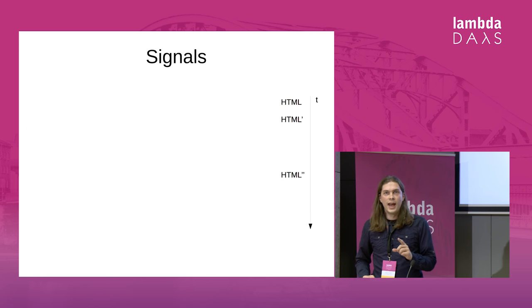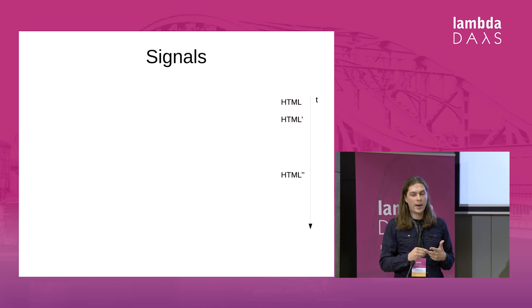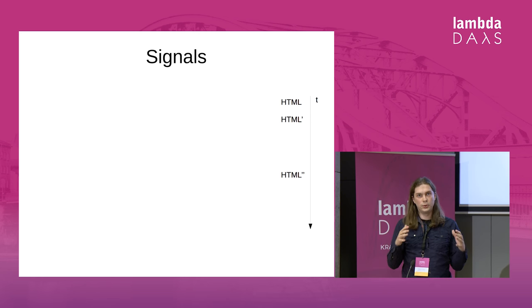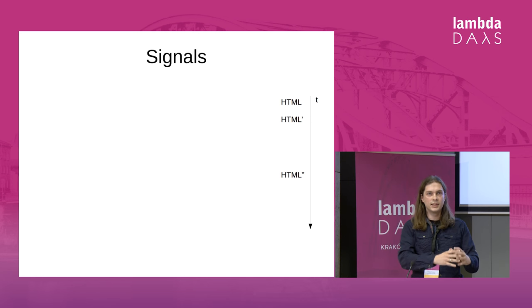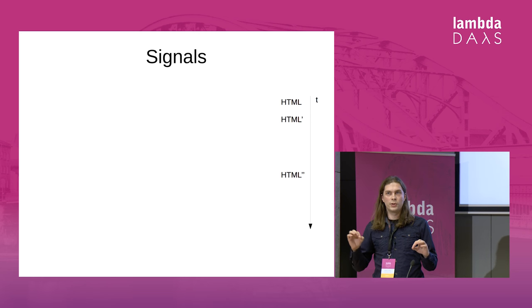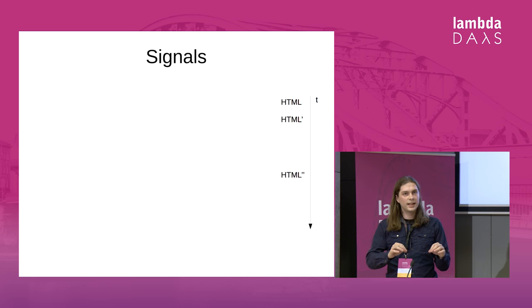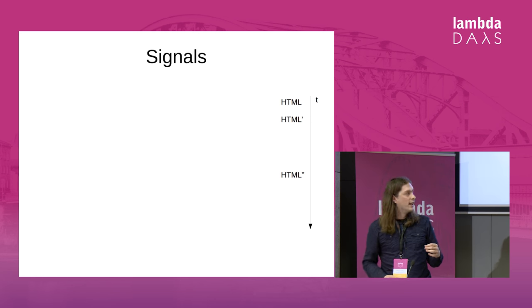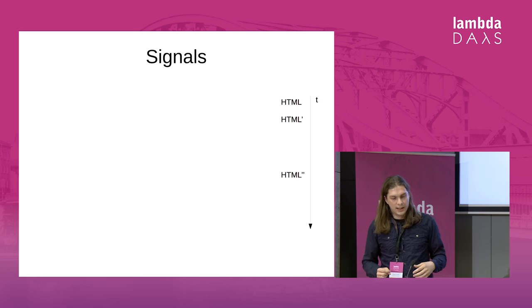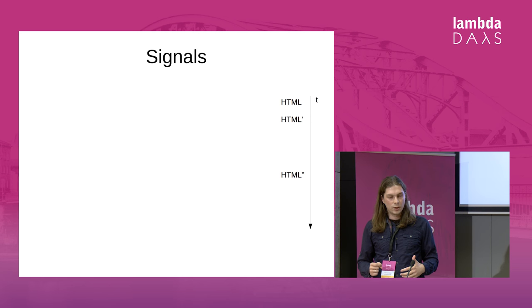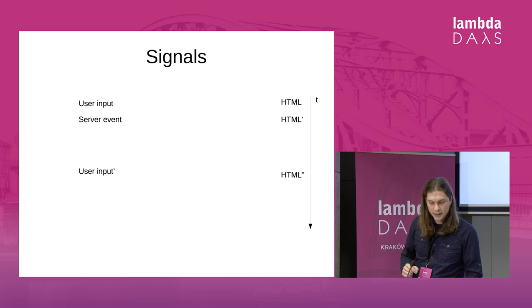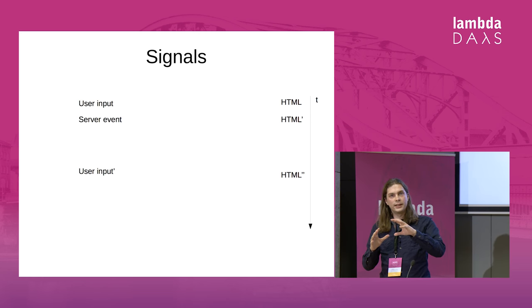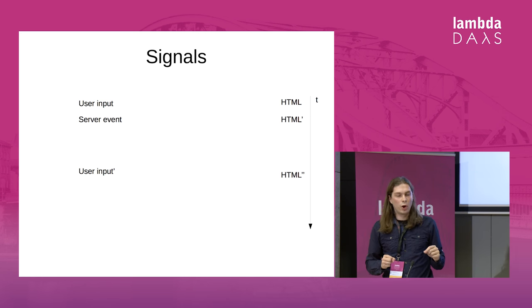So let's enter Elm. Elm is a functional, statically typed language that compiles to JavaScript, and you compose pure functions. However, pure functions on their own can't do anything — they can't print to the screen, they can't modify the DOM, they're simply useless. That's why Elm introduces something called signals. Signals are by definition values changing over time. So your main function in Elm is a signal with type Signal of HTML — the HTML is changing over time, which solves the problem of modifying the DOM. And user inputs and server events are also modeled as a signal.